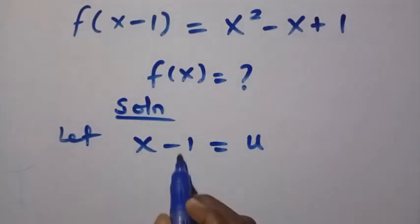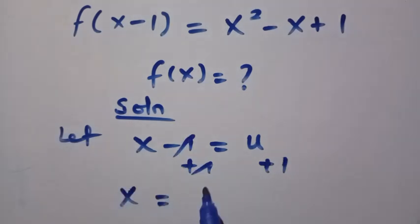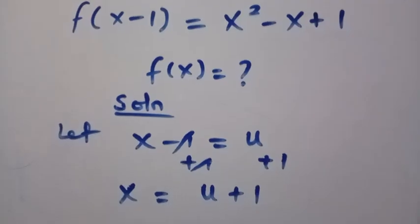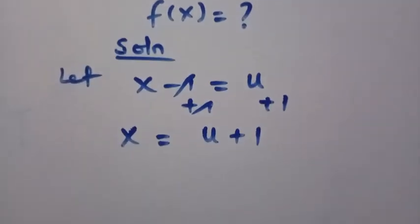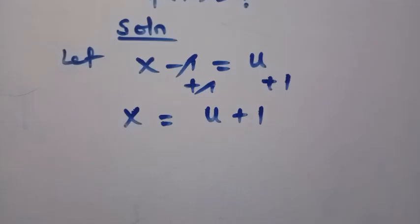By making x a subject, we add 1 to both sides. And here we have x equals u plus 1, or 1 plus u. So we come back to the given question and replace every single thing with what we have in the substitution.